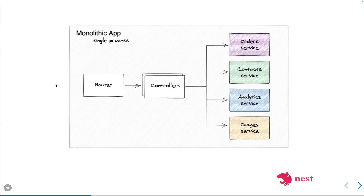All these services can be designed in a single monolithic app — a single process with a router and controller. You can design a single NestJS Express HTTP-based service exposing all REST interfaces, with an order service dealing with order entities and a contact service dealing with contact entities. But if anything goes down with the service and it's being consumed by a thousand different clients, all will be impacted.